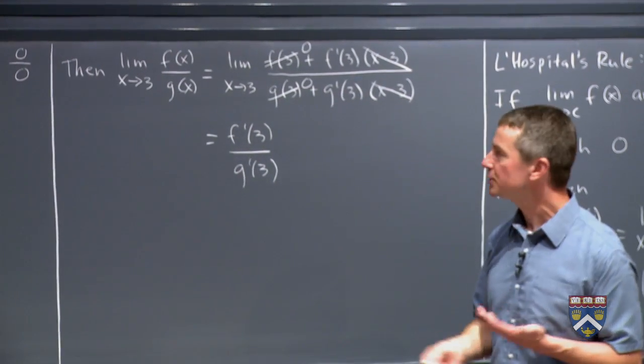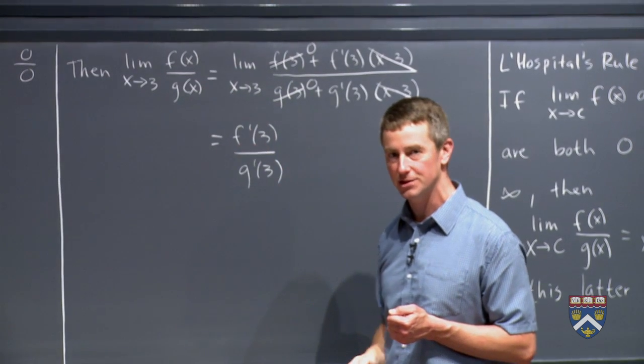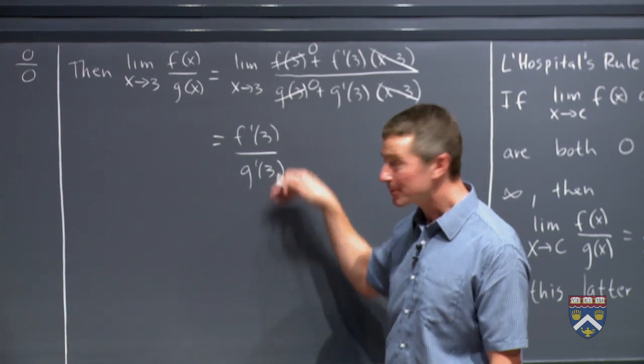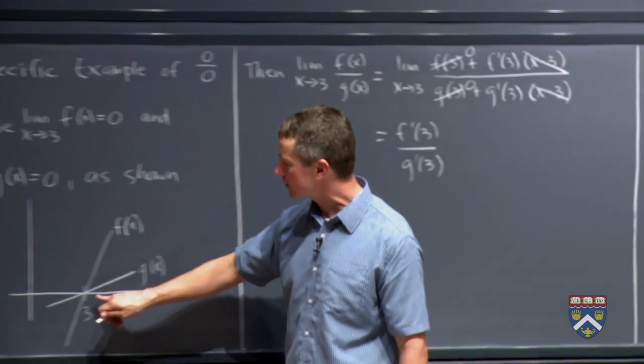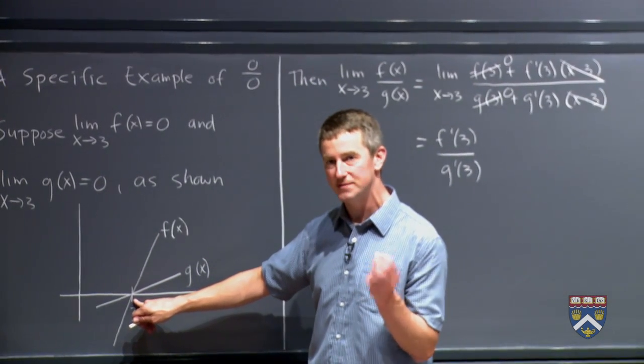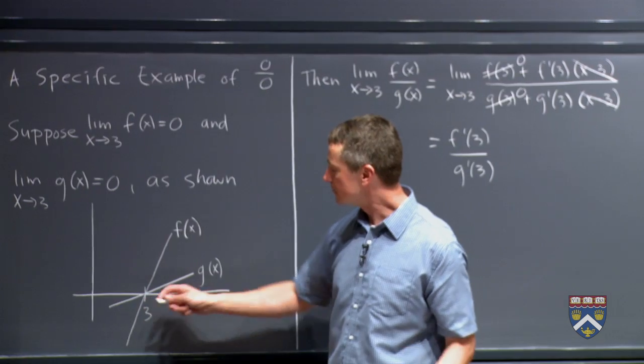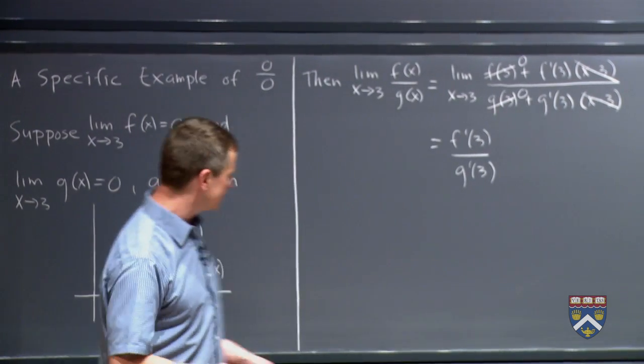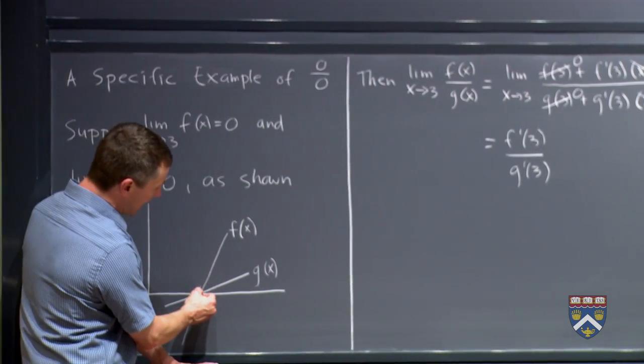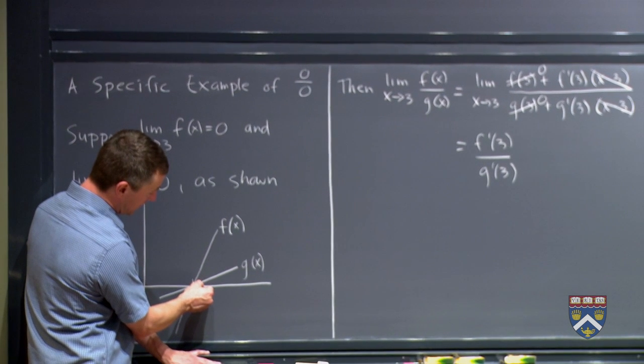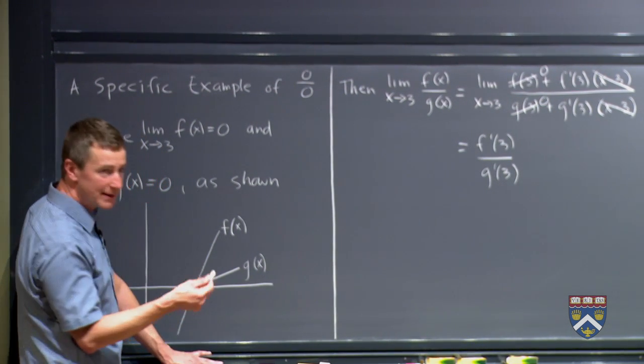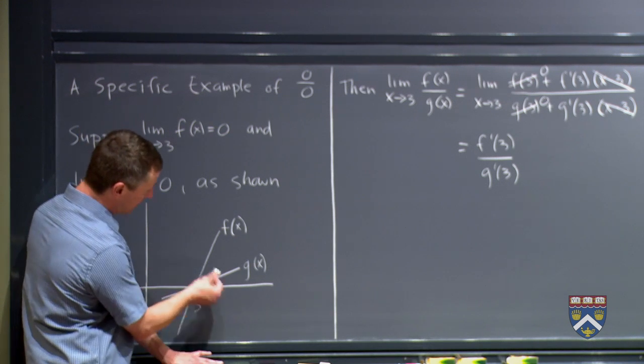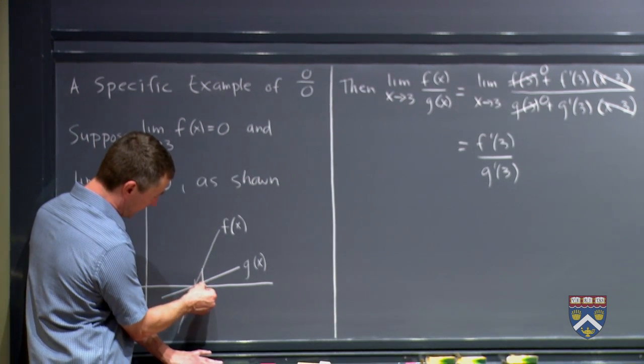That is to say that the ratio of the y values of the functions is the same as the ratios of their slopes. And that's because both of them were starting at a y value of 0 here at x equals 3. So if I start at this y value of 0 and if I go over some little distance here, the amount that the g graph will have gone up is dependent just on the slope of g.